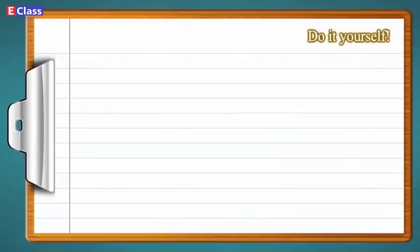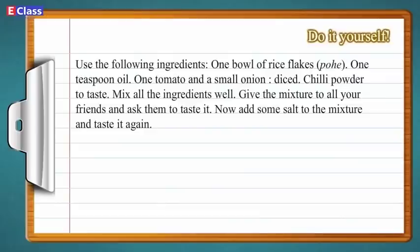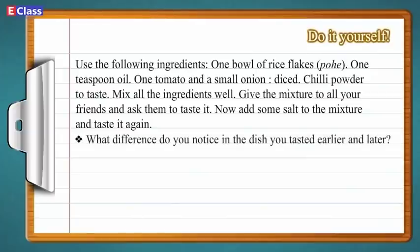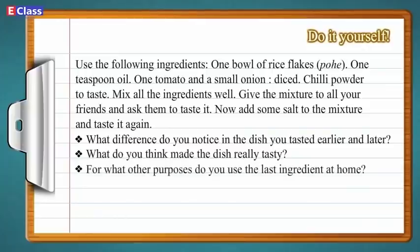Do it yourself. Use the following ingredients: one bowl of rice flakes (pohe), 1 teaspoon oil, 1 tomato and a small onion (diced), chilli powder to taste. Mix all the ingredients well. Give the mixture to all your friends and ask them to taste it. Now add some salt to the mixture and taste it again. What difference do you notice? What do you think made the dish really tasty? For what other purposes do you use the last ingredient at home? Discuss the source of this ingredient.